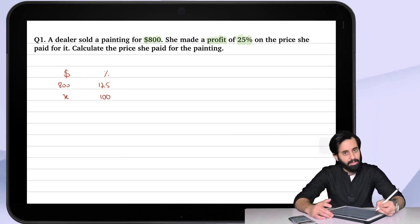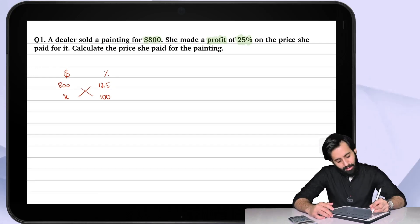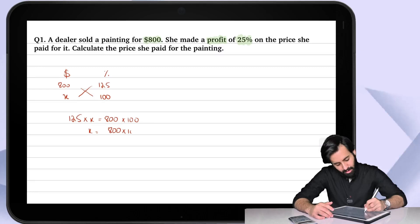So what do we do here? Well we simply cross multiply. So we have 125 times x equals 800 times 100. We can work out x by multiplying 800 and 100 together and dividing the answer by 125. So we can do this without a calculator.